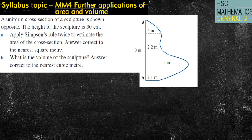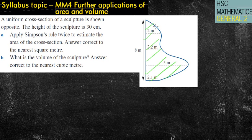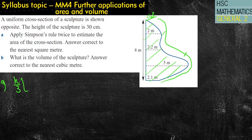Look at the next one — please have a crack at this yourself, pause it and see what you can come up with. A uniform cross-section of a sculpture is shown. The height of the sculpture is 30 centimeters. Apply Simpson's Rule twice to estimate the area of the cross-section. Answer correct to the nearest square meter. So for part A, we've got H over 3, times the first plus 4 times the middle plus the last value.